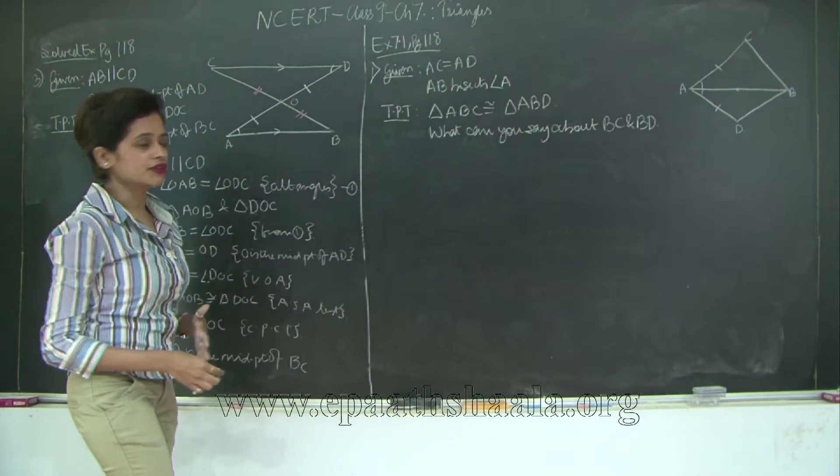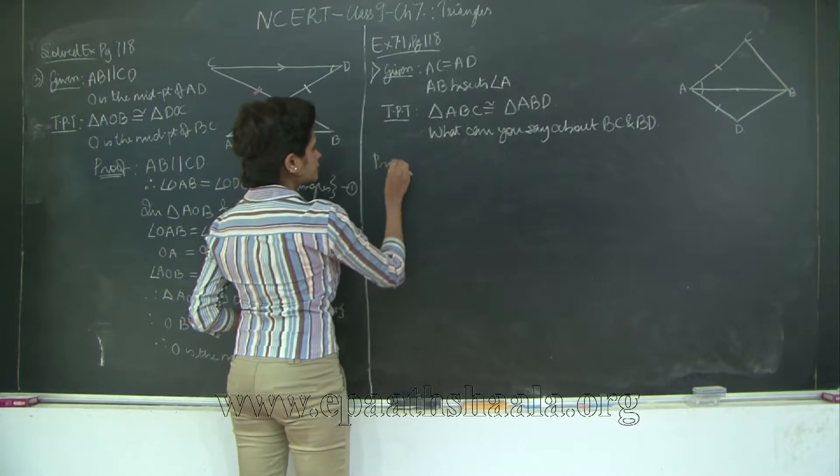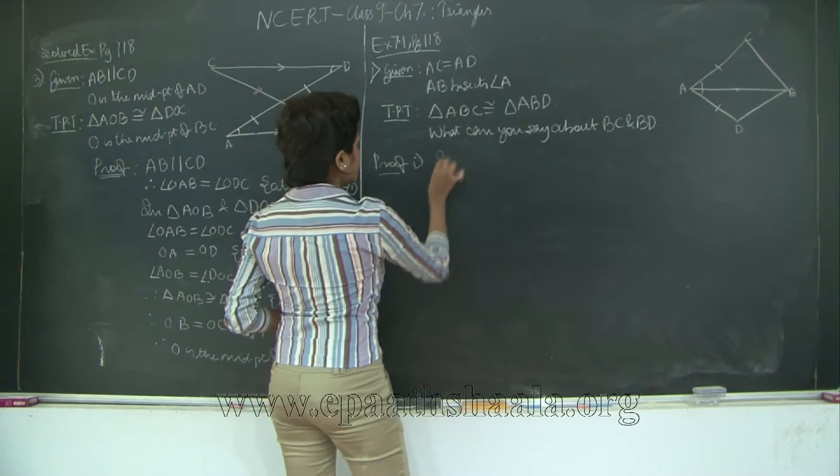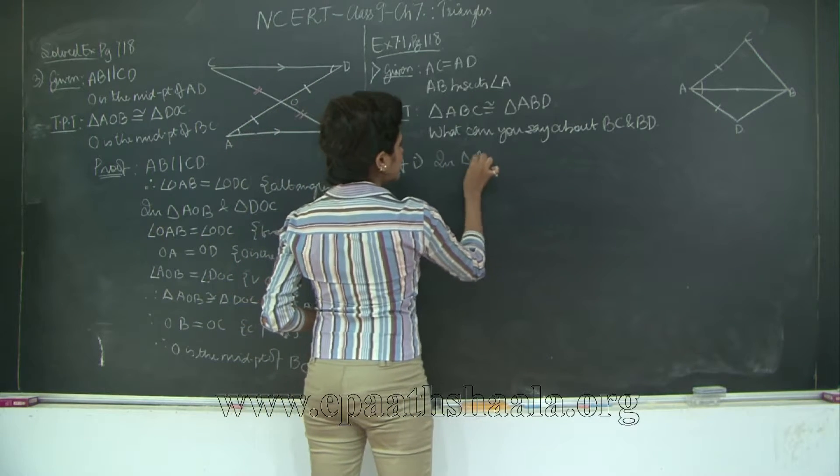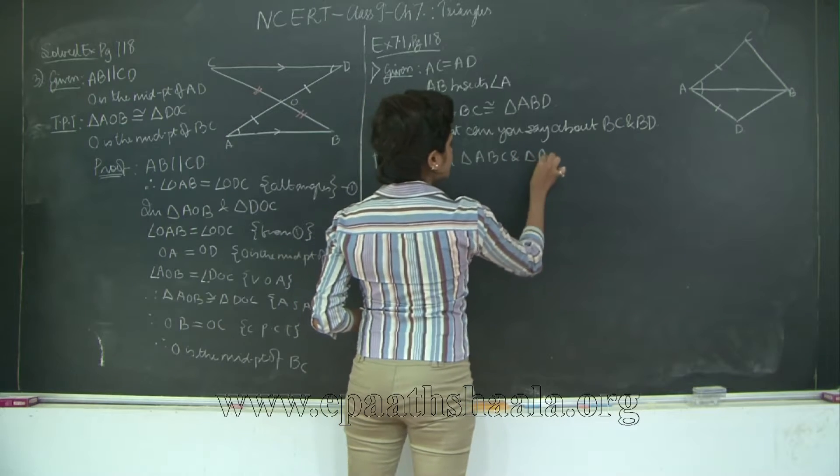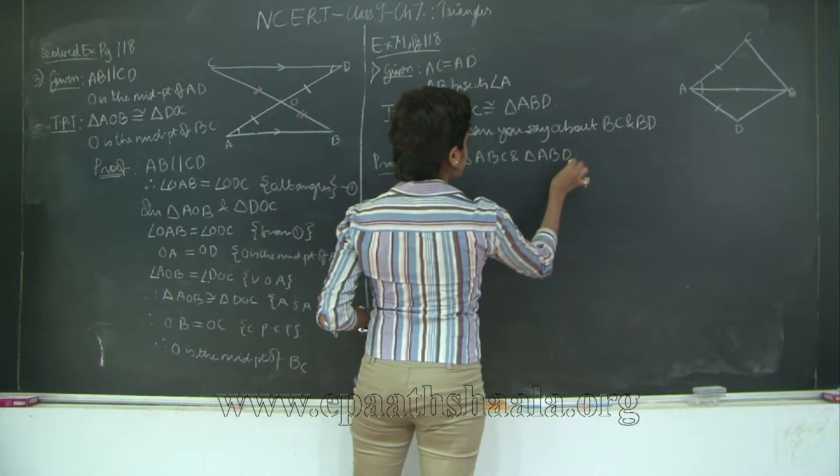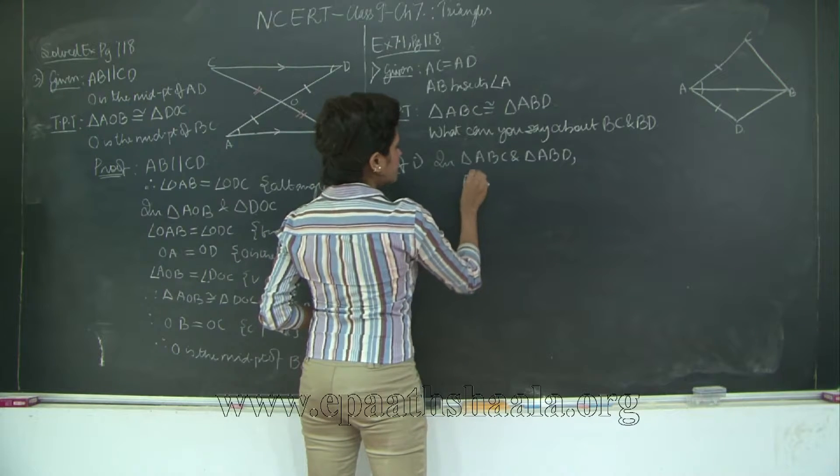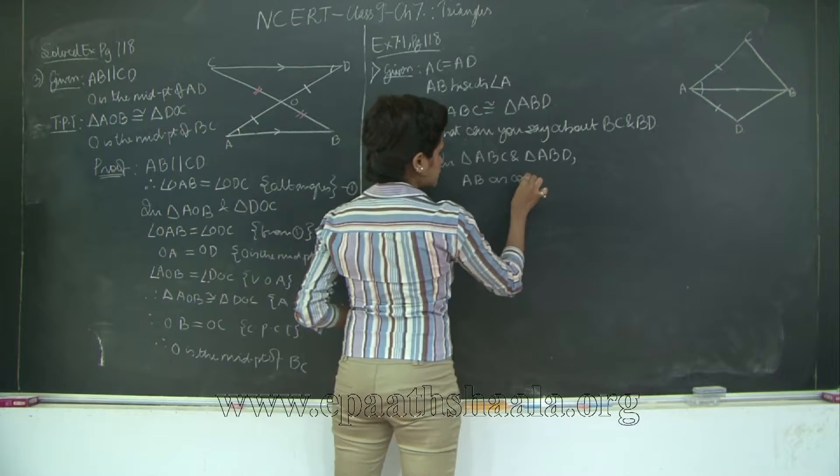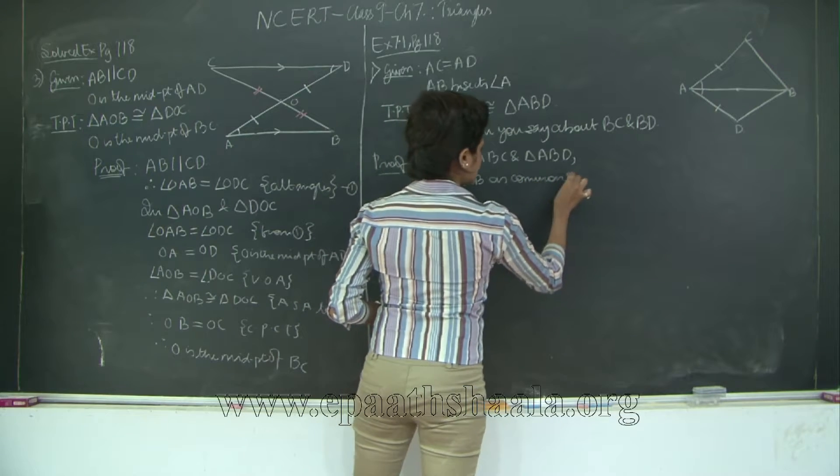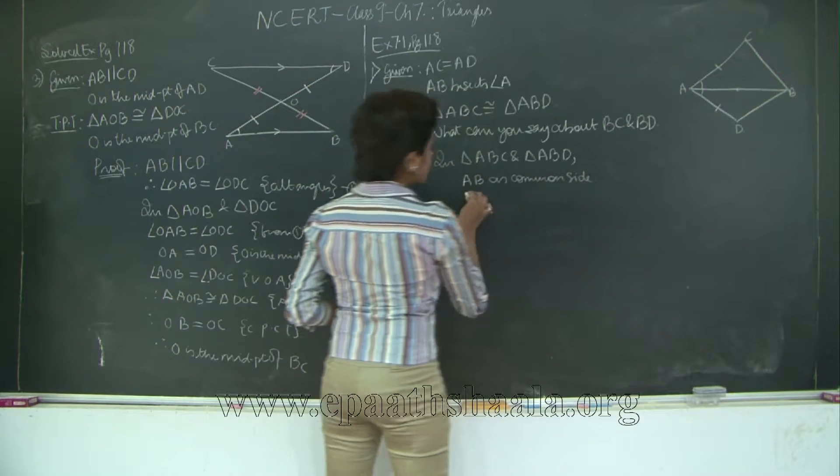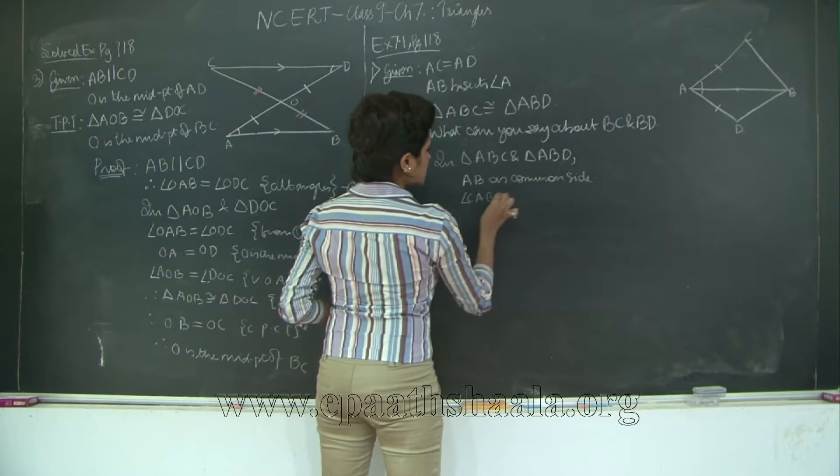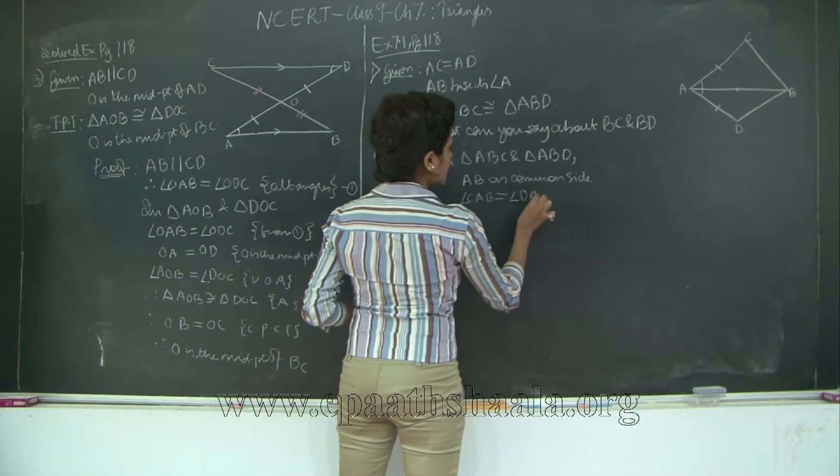Now let's go ahead and prove this. So I will say proof in triangle ABC and triangle ABD. I have AB as common side. Triangle CAB is equal to triangle DAB.